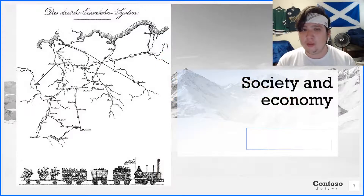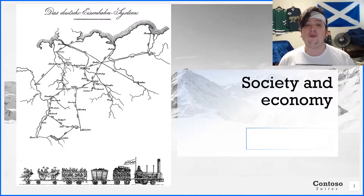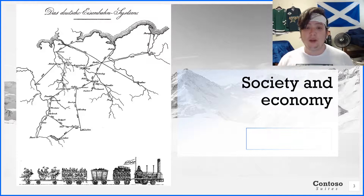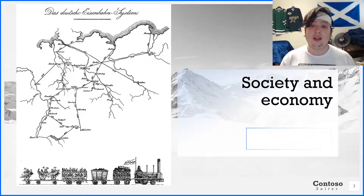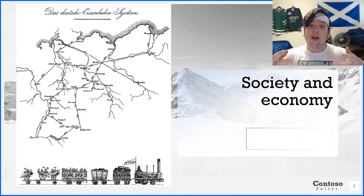So what was society and economy like? The population of the German Confederation, excluding Austria, grew 60% from 1815 to 1865 — from 21 million to 34 million. The era saw the demographic transition take place in Germany: a transition from high birth rates and high death rates to low birth rates and low death rates, as the country developed from a pre-industrial to a modernized agricultural economy supporting a fast-growing industrialized urban economic system.